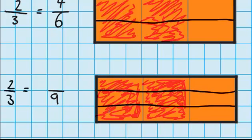I'll find out what my numerator is. Counting the shaded pieces: one, two, three, four, five, six pieces shaded. So I can see that two thirds is exactly the same as six ninths.